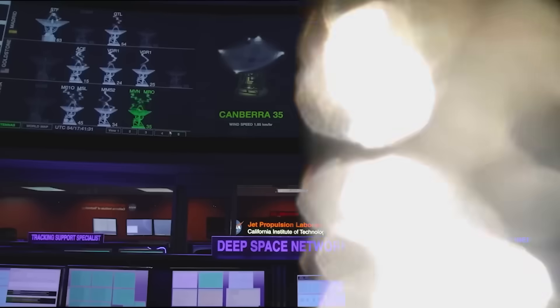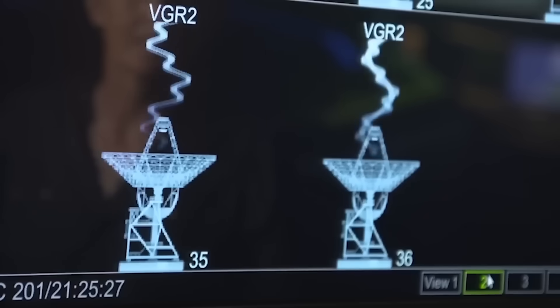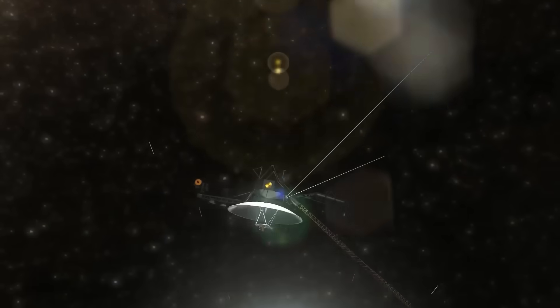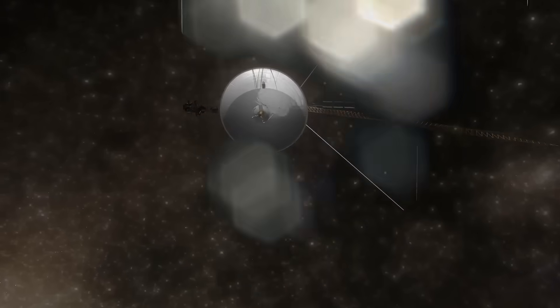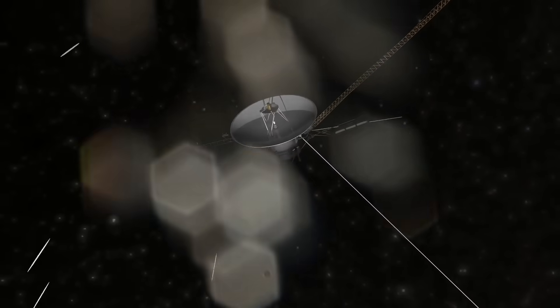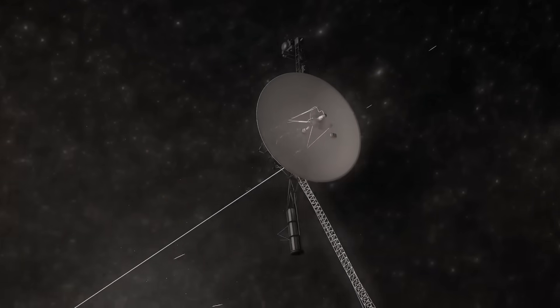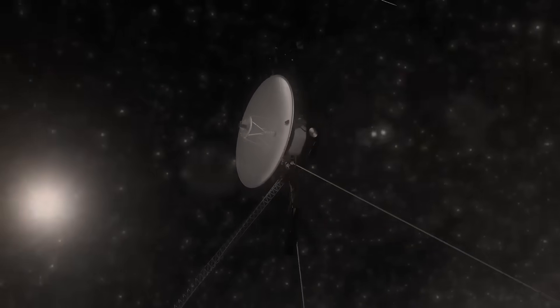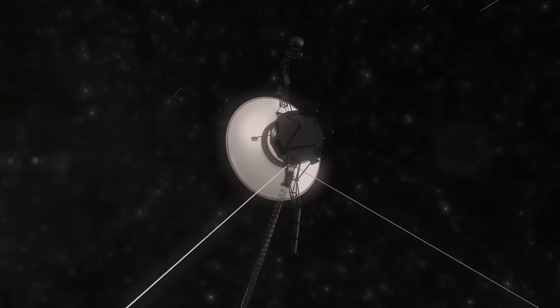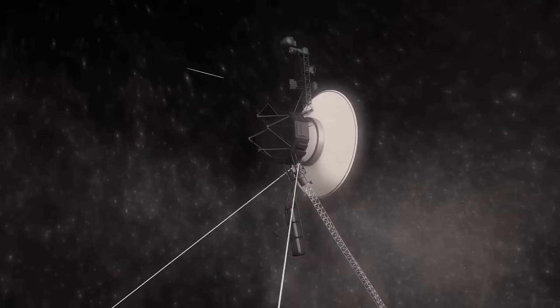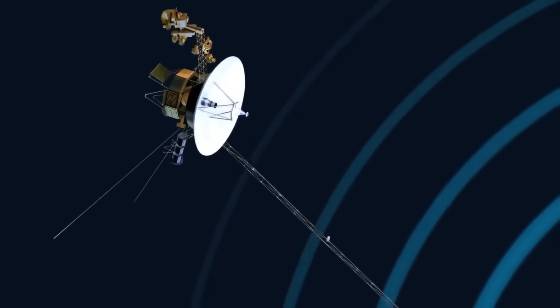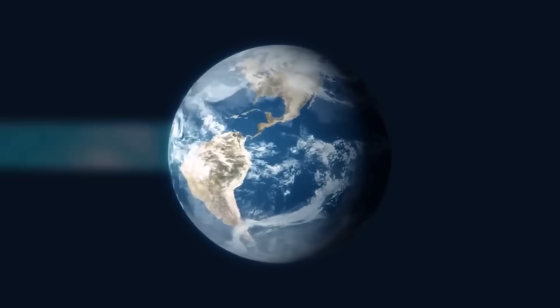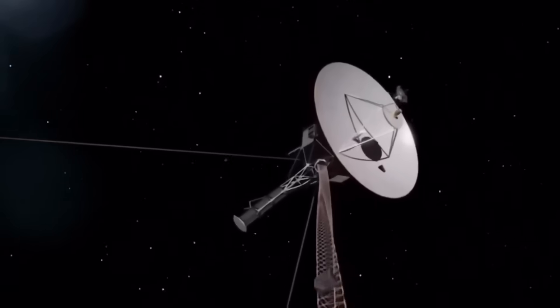The signals it captured, the images it relayed, the spiral codes and harmonic pulses, the shifts in trajectory, they all point to one horrifyingly beautiful conclusion. Voyager 1 was not alone. It never was. Something, someone, was listening, waiting, watching. And now that our most distant emissary has crossed the line between silence and response, we have to ask a question that no one at NASA ever dared to speak aloud. What if we were never meant to look back?